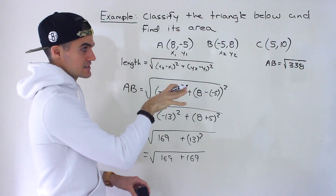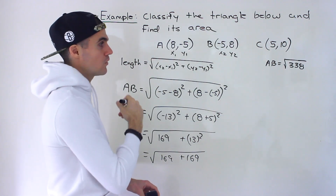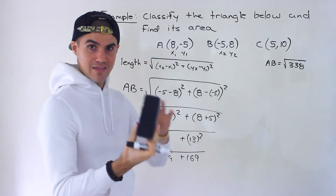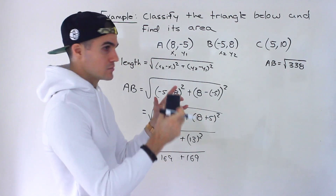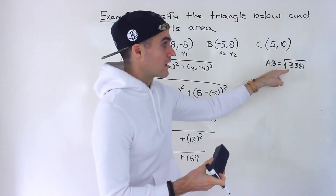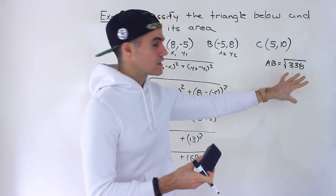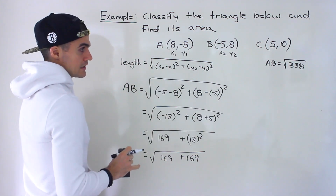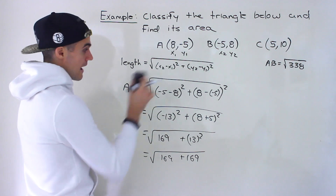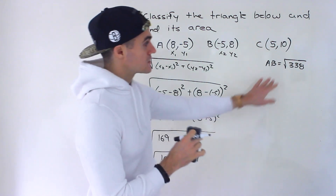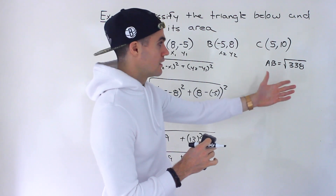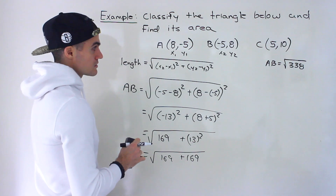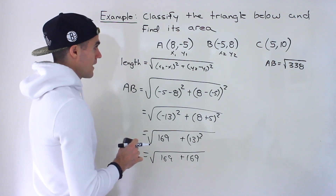I'm going to leave it as an exact value. I recommend leaving it in this format because once we plug it into the Pythagorean identity where we're squaring the lengths, this square root is just going to go away and we'll just have 338. Unless the square root gives you a clean integer, I recommend leaving it in that radical format.